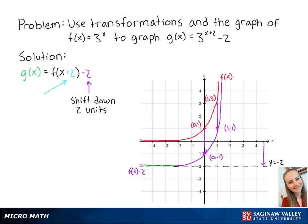Adding 2 to x means that we will shift the new graph 2 units to the left. So our new points are at negative 2, negative 1 and negative 1, 1.